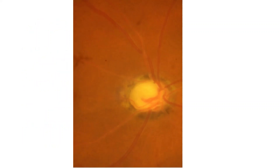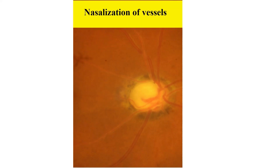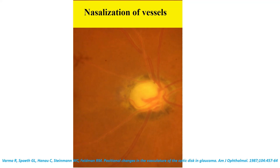As the cup enlarges, the retinal vessels which usually pass perpendicular through the disc tissue to reach the retina are displaced nasally, following the receding nasal wall of the cup. Nasalization of blood vessels occurs in advanced glaucoma where the only structural support remains along the nasal rim. Nasalization of vessels is not specific for glaucoma.